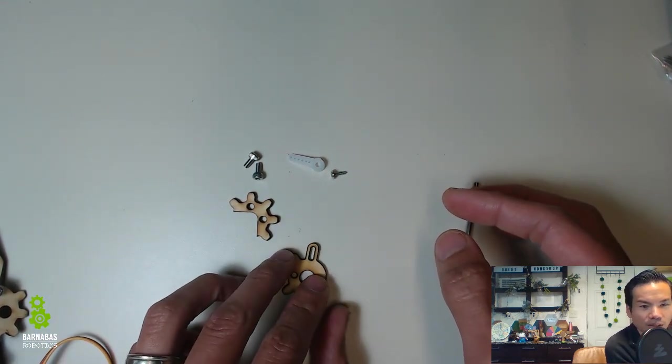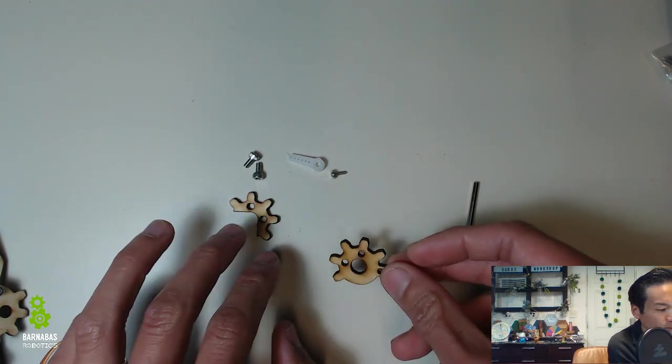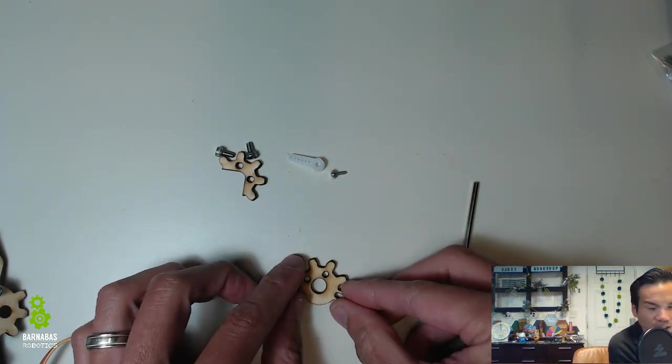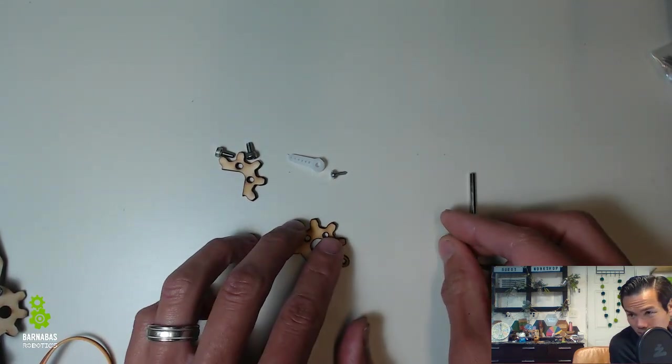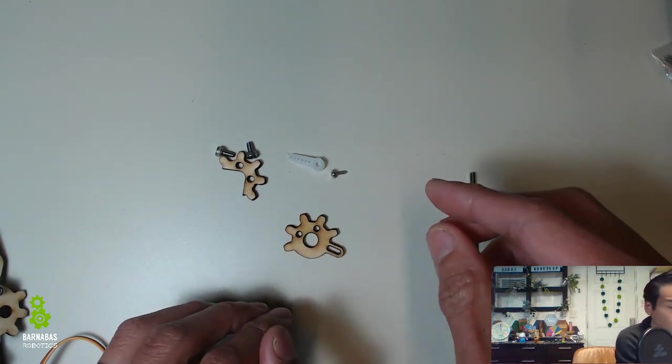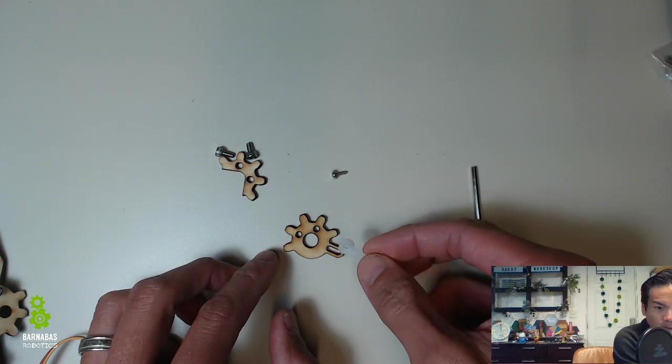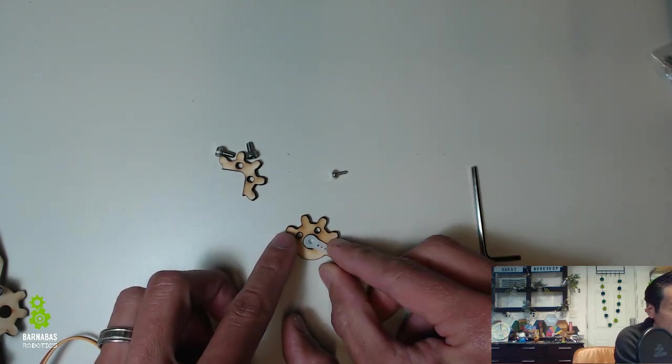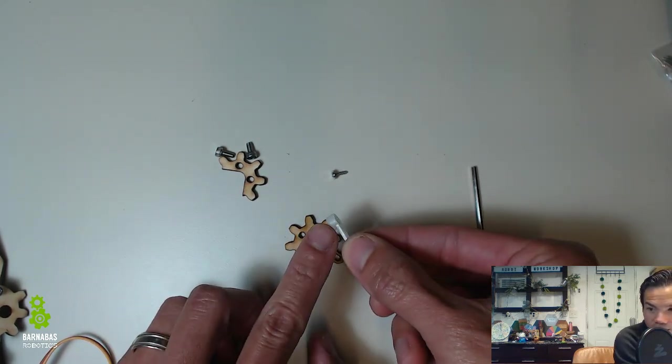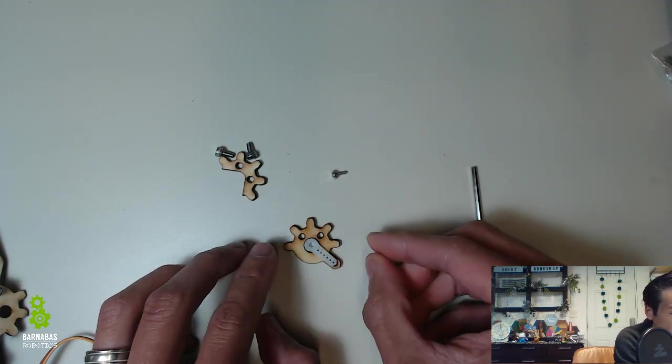So the first thing we're going to do is we're going to take this gear piece like this. I'm going to put it like this on my table and I'm going to take my servo horn here and we're going to put it into there like this. So this little notch there will go into it.